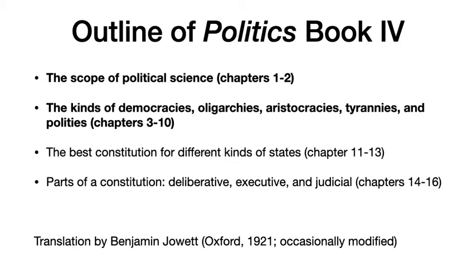As with Book 3, this isn't just a random grab bag of topics — they're actually tightly interrelated and interconnected. It turns out that the scope of political science is to figure out not just the definitions, but how to establish each of the kinds of constitution. That requires differentiating the kinds of constitution, but also the kinds of regimes possible under each one. There are four or five kinds of democracies, oligarchies, etc., and this leads to a discussion of what among all these possible variations is the best constitution in general and the best for most states. Then the discussion of the parts of the constitution gives not just an abstract account, but how to bring about the various kinds of regime — for example, a democracy or oligarchy — by means of appointments to the deliberative, executive, and judicial branches.